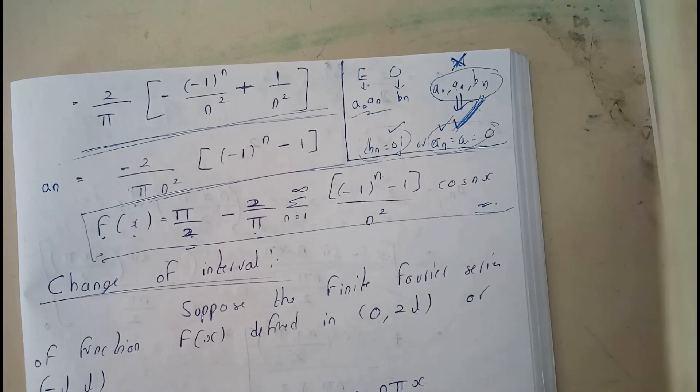So we will be solving it in a normal way, and at the end you will be writing at the top that it is an even function. So we need to find only aₙ and a₀. If it is an odd function we will be finding only bₙ, like that you can write the statement and conclude it right there.